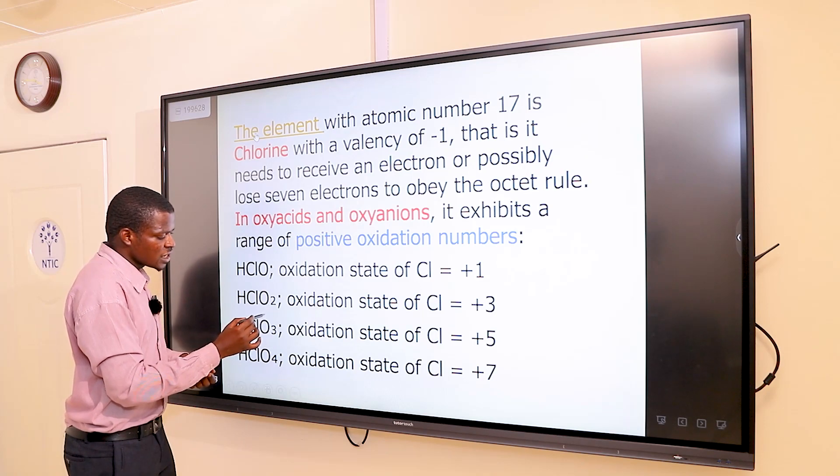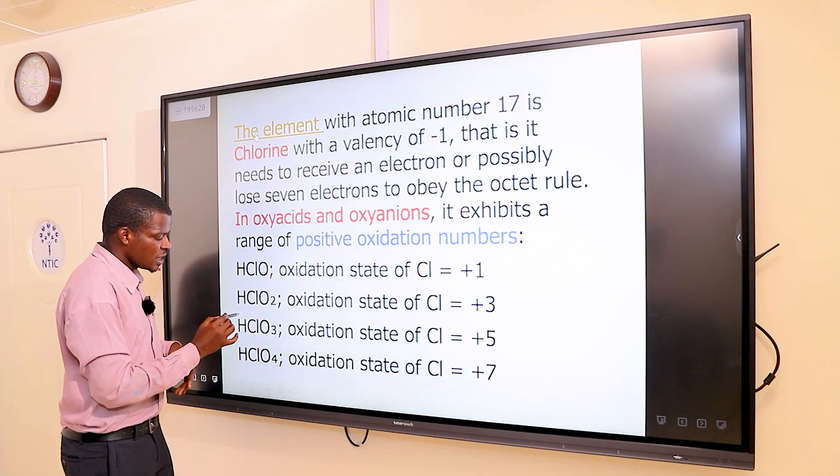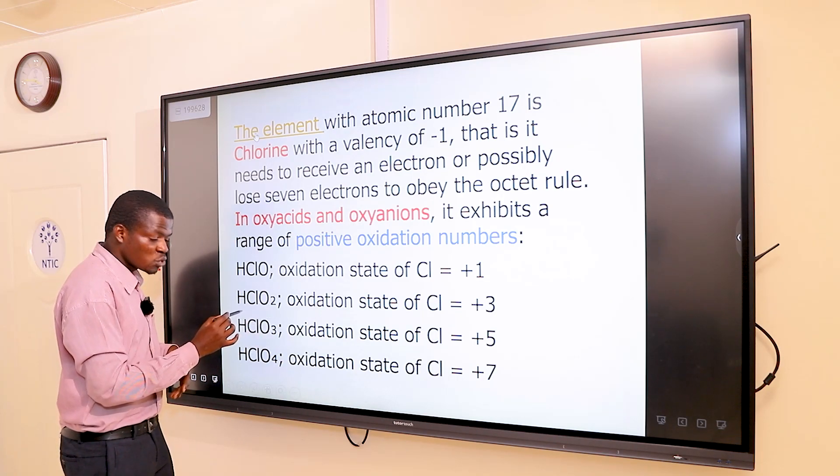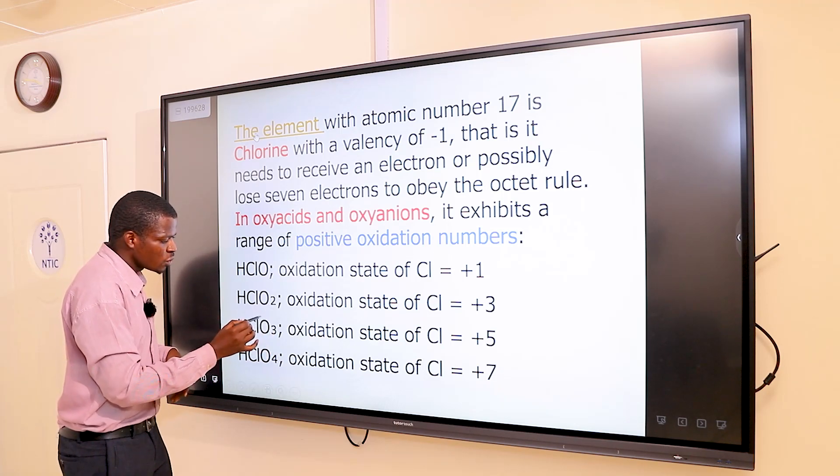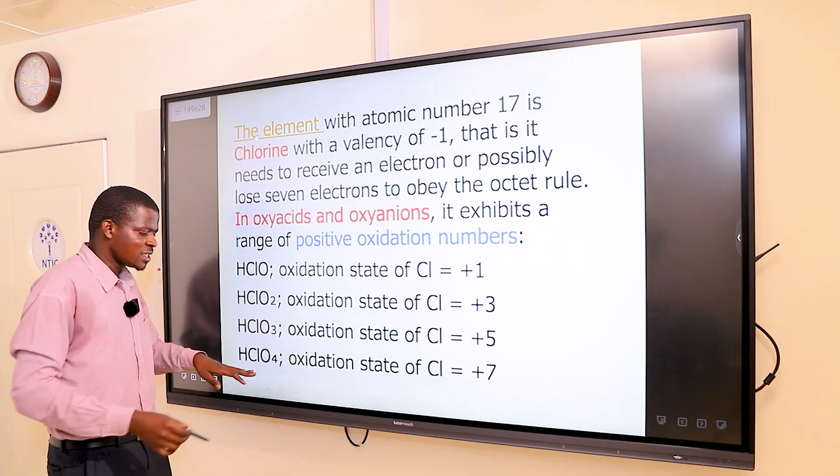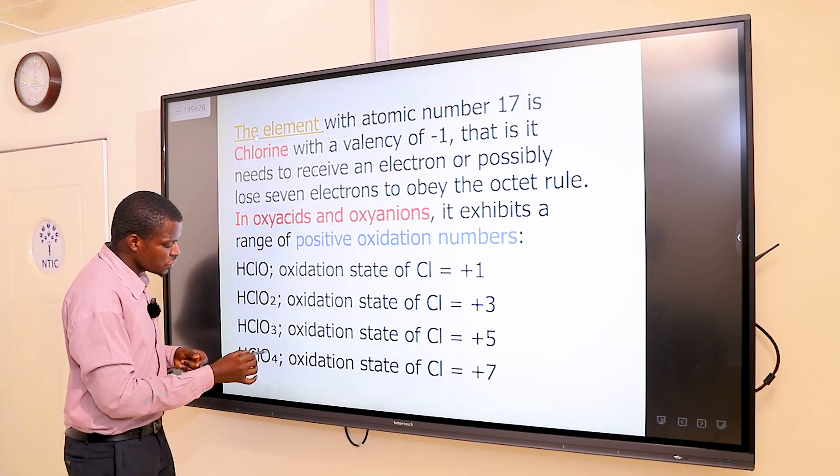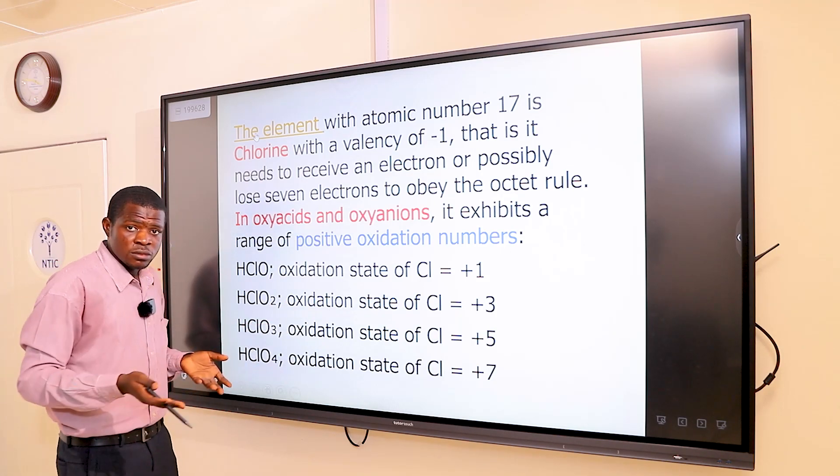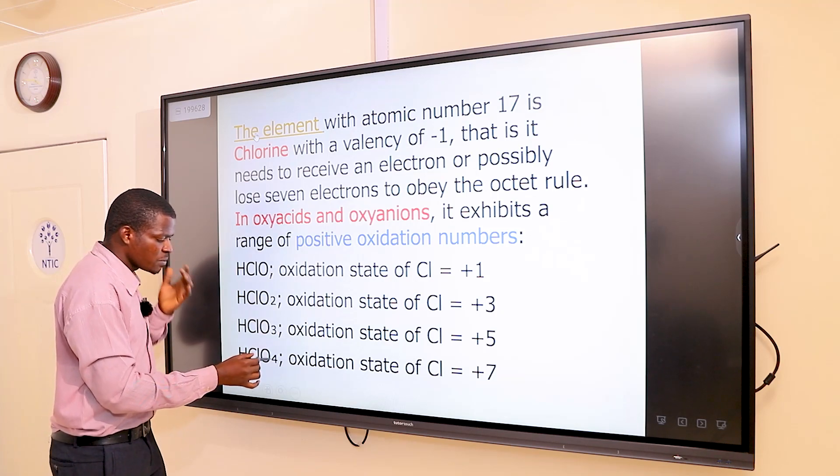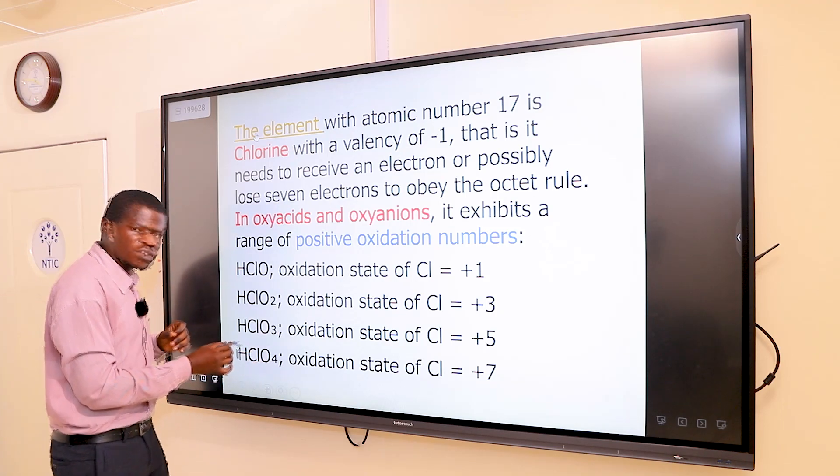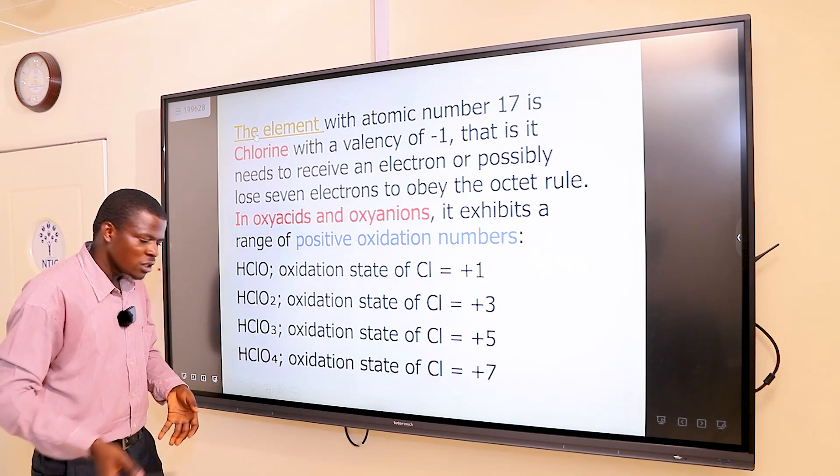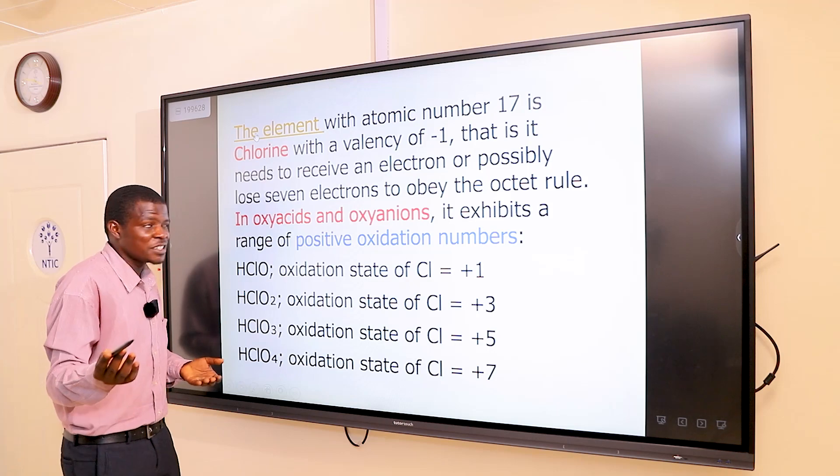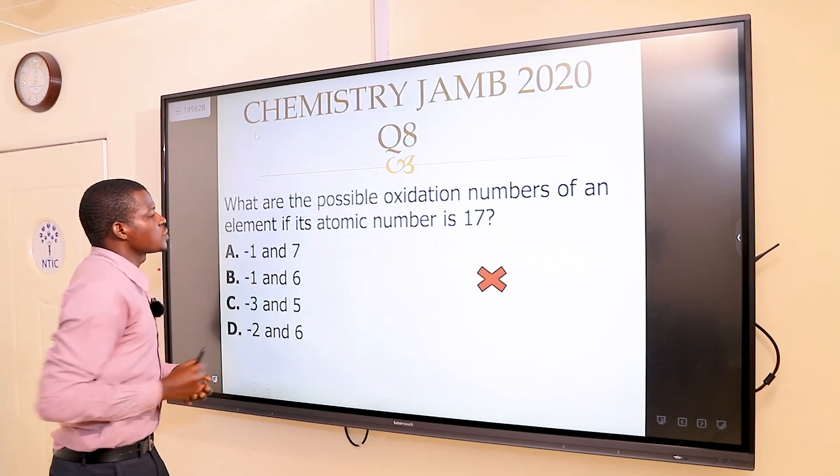Here, I have oxygen as minus two times three, which is minus six. Hydrogen is plus one. To make everything zero, I have minus six, I have plus one, that's minus five. Chlorine must be plus five. The same thing happens here. Oxygen is minus two times four, which is minus eight. Minus eight plus one from hydrogen, that's minus seven. To make minus seven zero, chlorine must be plus seven.